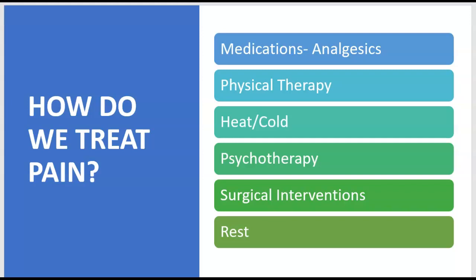So how do we treat pain today? Of course with medications — analgesics, which is what we're talking about today. Physical therapy is also an option, as well as heat and cold, such as heating pads and ice. Psychotherapy is one that most people don't always consider. There are also surgical interventions — for example, if you have abdominal pain associated with appendicitis, you have an appendectomy where they remove your appendix, and the pain goes away once you've healed. And of course, rest.